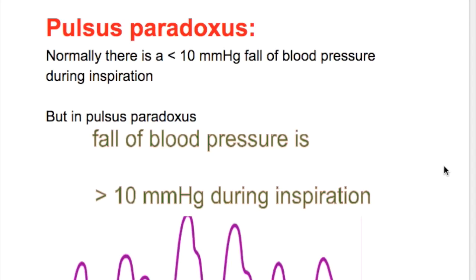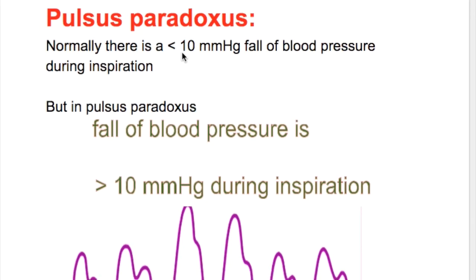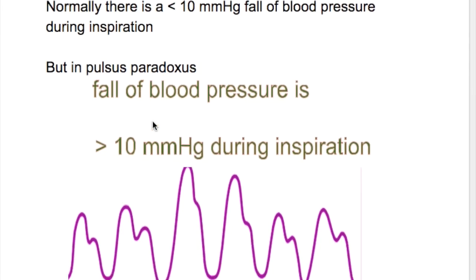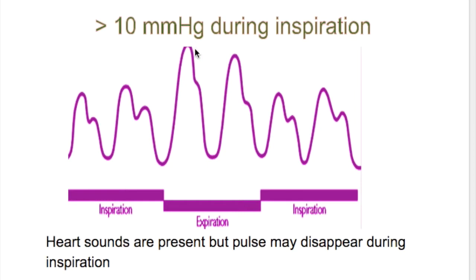What is pulsus paradoxus? Normally, there is a less than 10 mmHg fall of blood pressure during inspiration. But in pulsus paradoxus, the fall of blood pressure is more than 10 mmHg during inspiration.